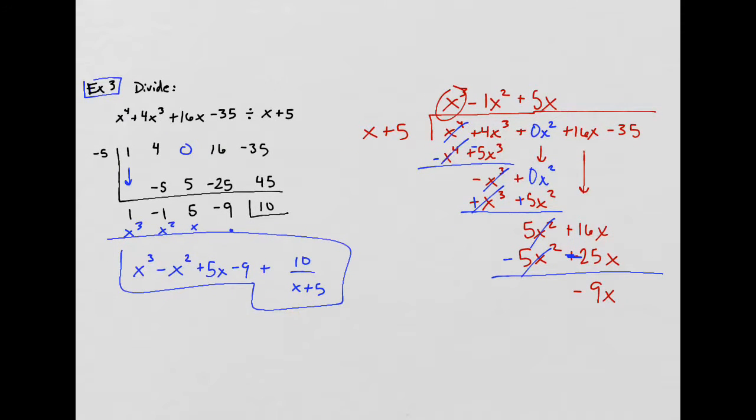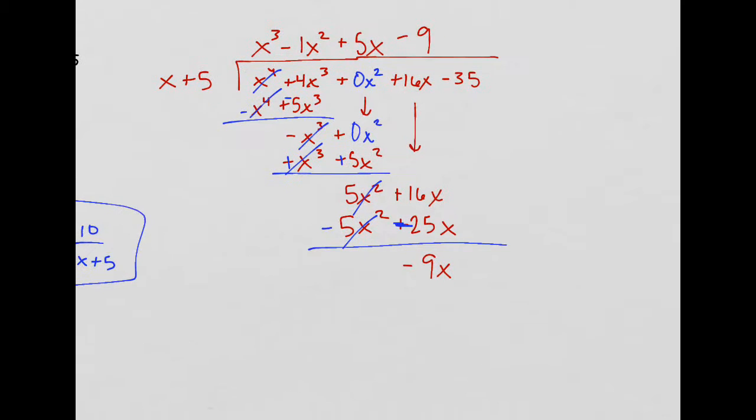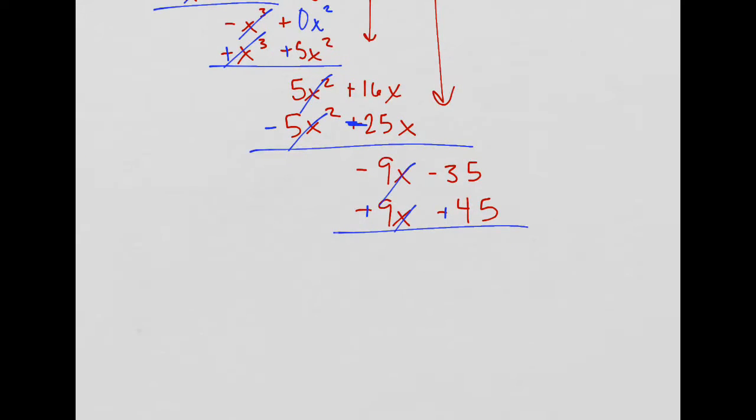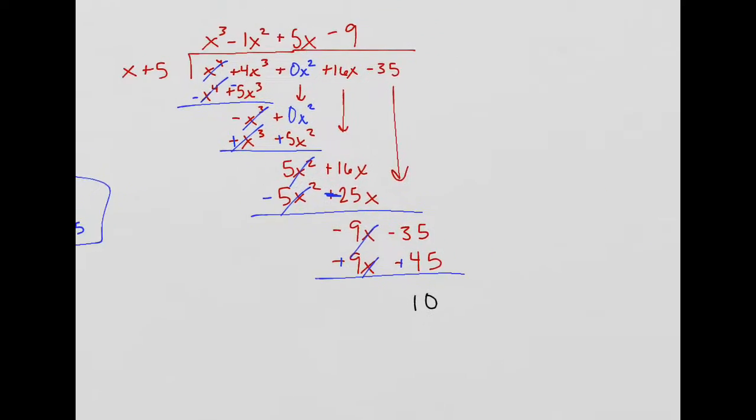Oh, look. x cubed minus x squared. Plus 5x. I bet it's going to be a 9 next. Minus 9. Right? Yeah. What times x gives me negative 9x? Well, that's just negative 9. And then I distribute that. Oh, I've got to bring this one down, huh? Minus 35. Okay. Negative 9x. And then negative 9 times 5. That's negative 45. Change the sign to subtract. That goes away. And then I have positive 10. Look at that. That's interesting. Okay, let's write this down one last time.